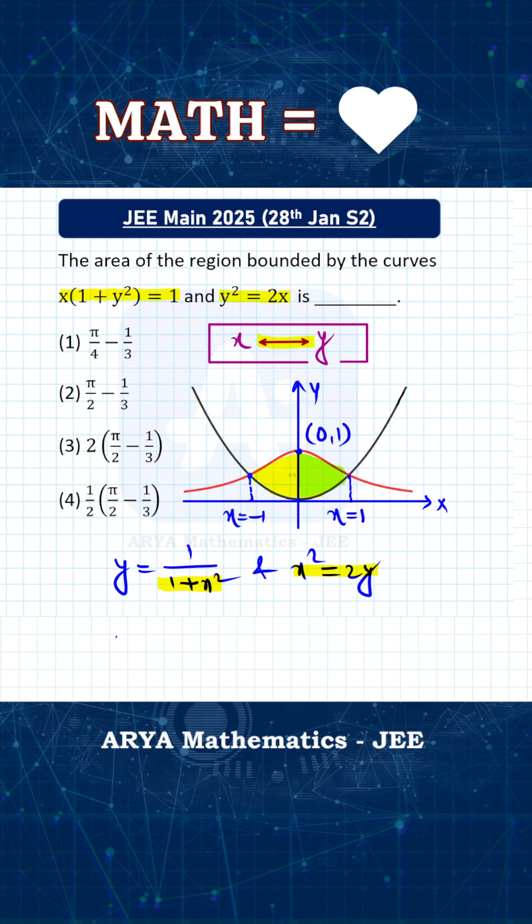So basically this required area will be twice of area from 0 to 1. So twice of integration 0 to 1, the upper curve is red one, the equation is y equals to 1 by 1 plus x square, and the lower curve is this parabola whose equation is y equals to x square by 2. So this is basically the required area, and if you do the calculation you will find that this number is π by 2 minus 1 by 3, and therefore correct answer will be second option.